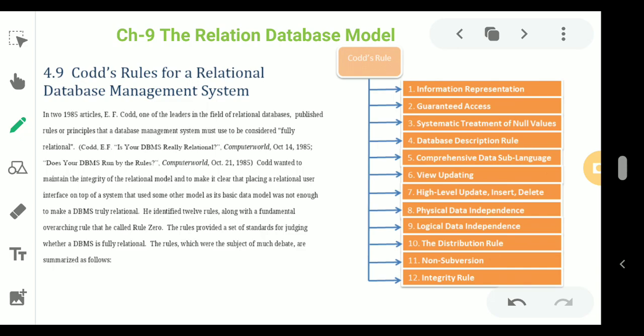Rule 12 is the Non-Subversion Rule. Data structure cannot be modified other than through a database language. Databases usually have an administrator tool that allows direct manipulation of the data structure. This covers all of Codd's rules for relational database management systems, which we need to follow while setting up or creating a database.